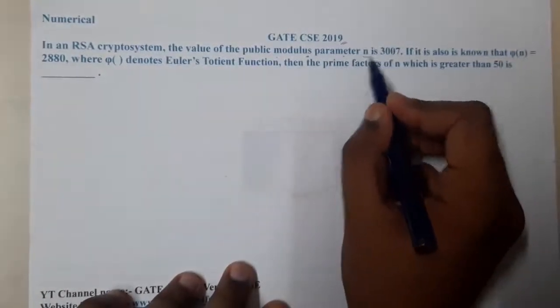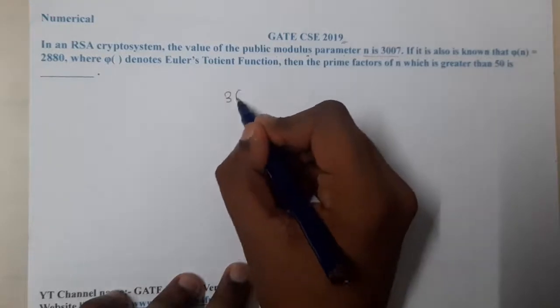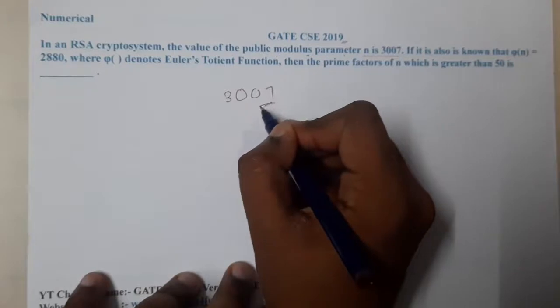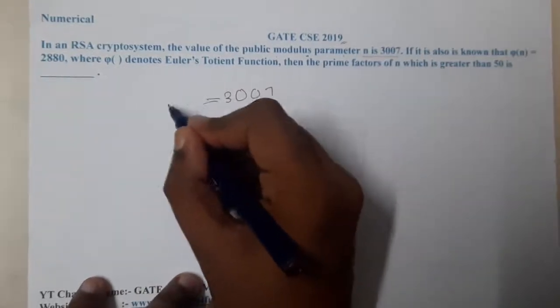So they clearly give the value of n which we do mod with, right? So if we know the value of n, I think we can guess the values of the original values p and q.